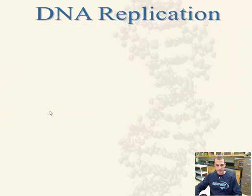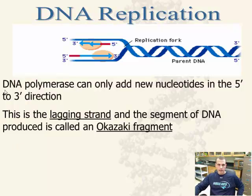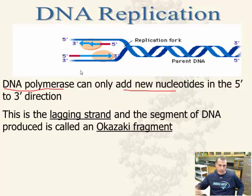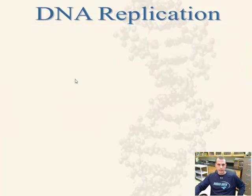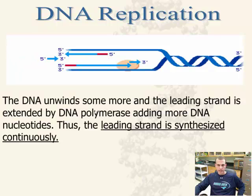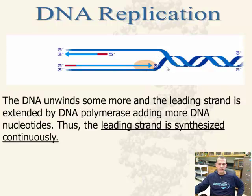Looking at this again, the polymerase is just adding the new nucleotides and proofreading. By adding the new nucleotides, it creates what we call Okazaki fragments, and these fragments have to be put together eventually. So DNA polymerase is a proofreading mechanism found within the DNA to help reduce the number of mistakes. As you can see, the DNA unwinds some more and the leading strand is extended — the helicase enzyme unzips and unwinds, the polymerase comes in and helps add these nucleotides and fix the mistakes.